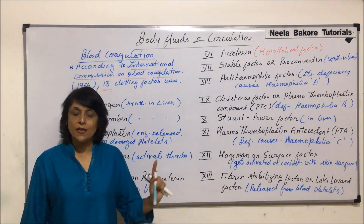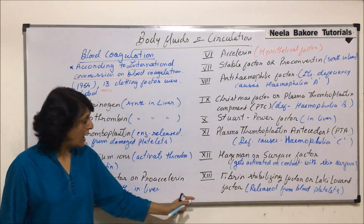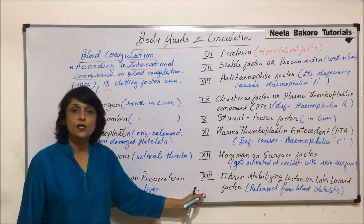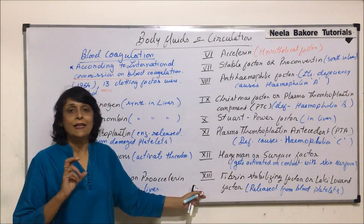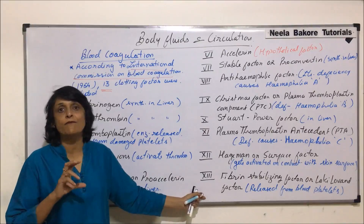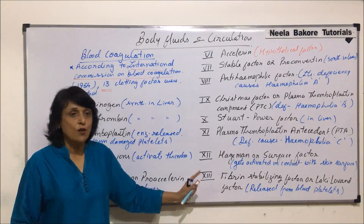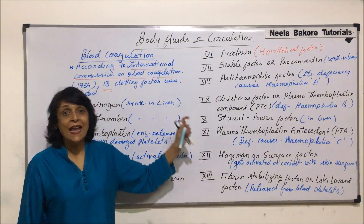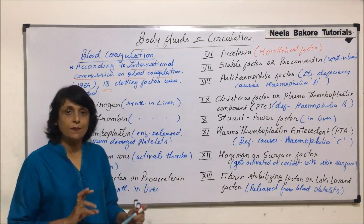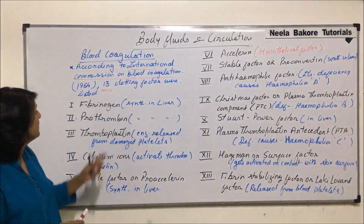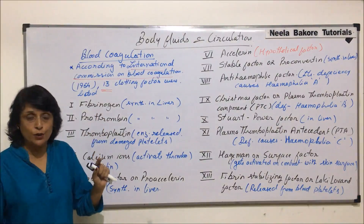After we finish discussing all 13, we will address why in some places only 12 factors are mentioned. We will take that up at the end. As mentioned, they are all given Roman numerals.